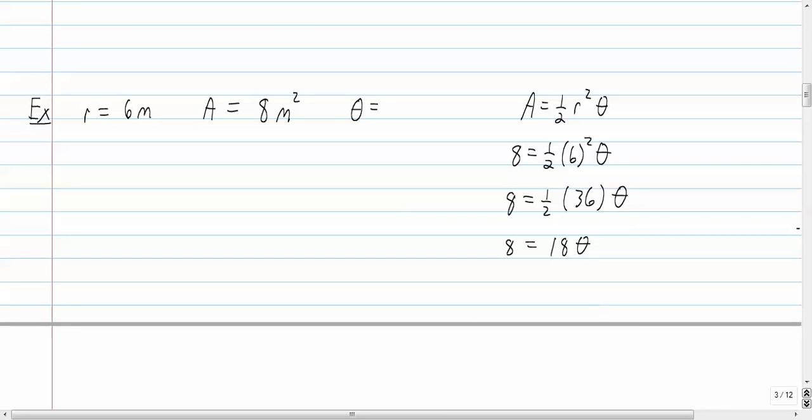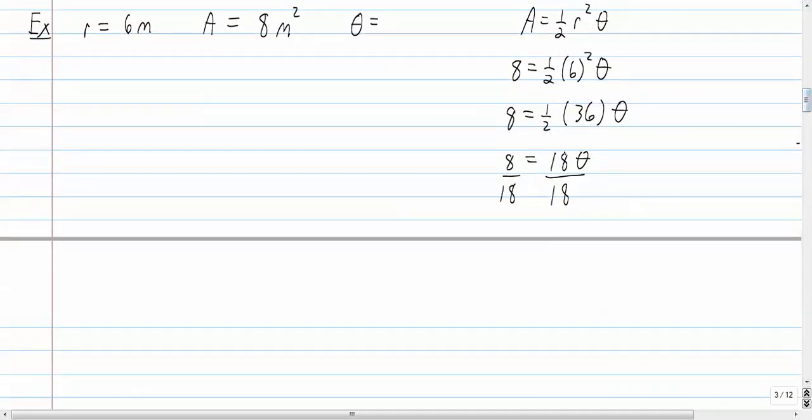So to solve for theta, we need to divide both sides by 18. Okay, so we get theta equals 8 over 18, which reduces to 4 over 9.